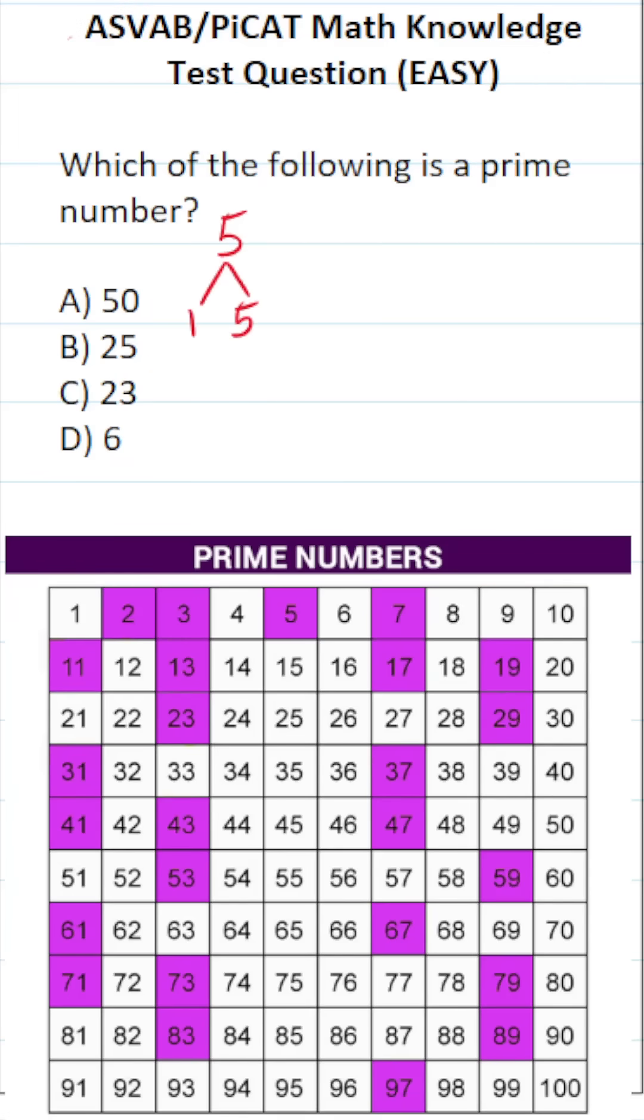For example, we would say 5 is prime because it's only divisible by 1 and 5. You can see all the prime numbers from 1 to 100 in this chart down here, specifically highlighted in purple. I just want to point out that 1 is never considered a prime number.